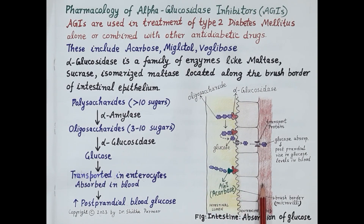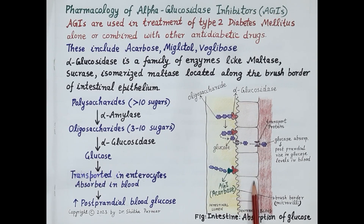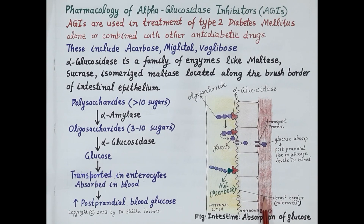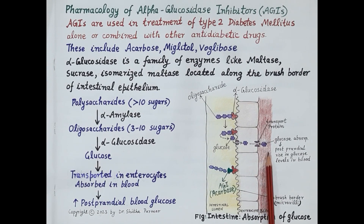Look at this figure, which shows a section of the small intestine. This is the intestinal lumen and this is the intestinal wall, composed of intestinal epithelial cells termed as enterocytes. This is a blood vessel where nutrients from food — like glucose, amino acids, and fatty acids — are absorbed.